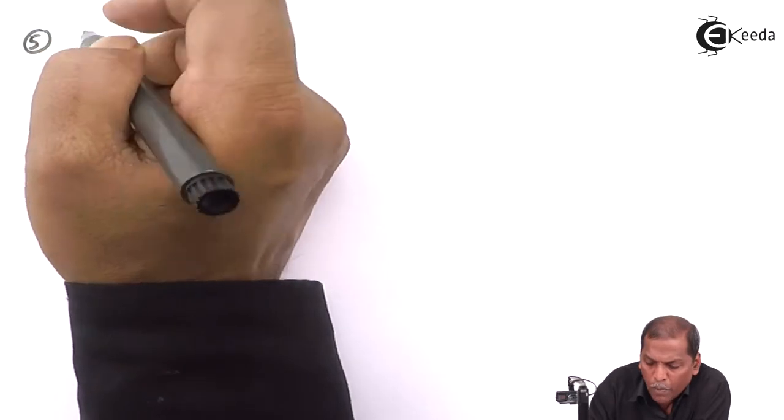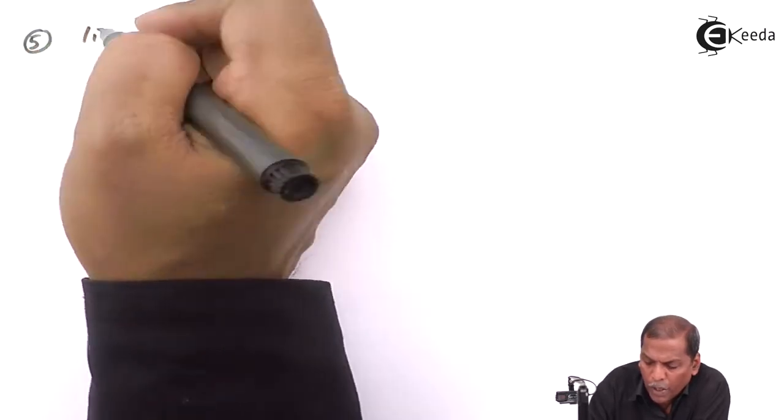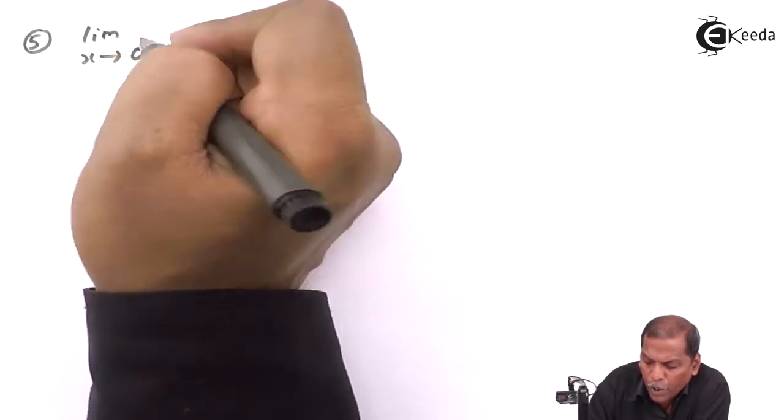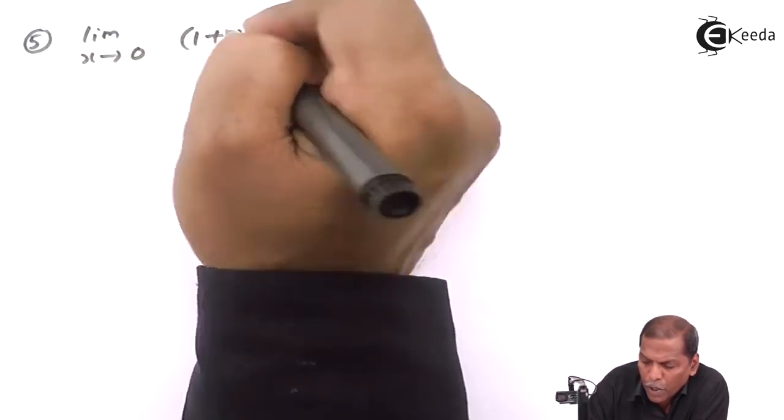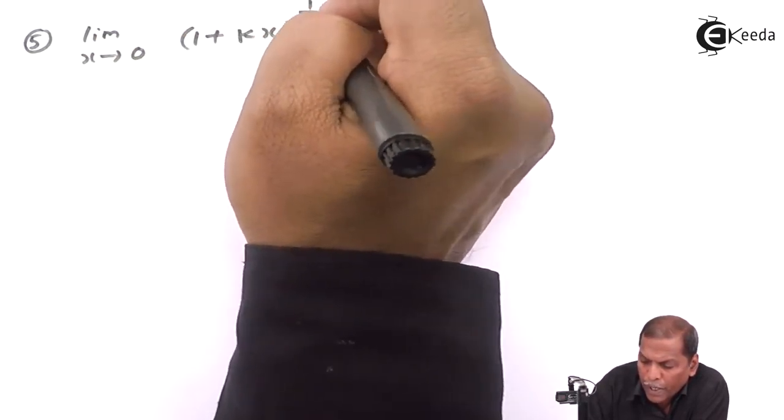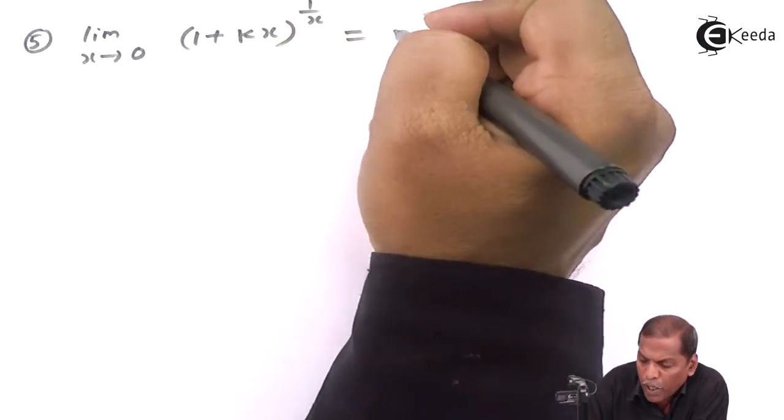Result number five is: limit as x approaches zero of (1 + kx)^(1/x) equals e^k.